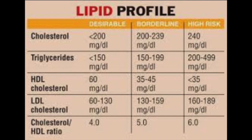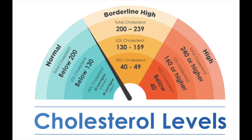Triglycerides are usually kept less than 150; anything more than 150 we call elevated. Triglycerides are usually made of three fatty acids and one glycerol molecule. Whatever oily or fatty food that we eat gets converted into triglycerides, and triglycerides are a major marker for cardiovascular events, pancreatitis, and many other diseases.